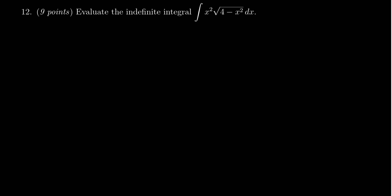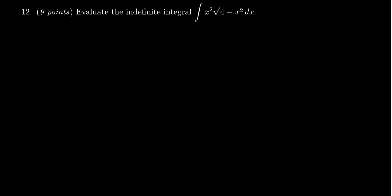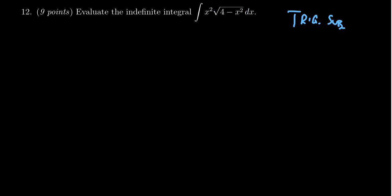In this video, we're going to discuss the solution to question 12 for the practice midterm exam for Calculus 2 Math 1220. We have to evaluate the integral of x squared times the square root of 4 minus x squared. For question 12 on this midterm exam, you can anticipate there to be a trig substitution, and this square root of 4 minus x squared is really indicative that you want to do a trig substitution.